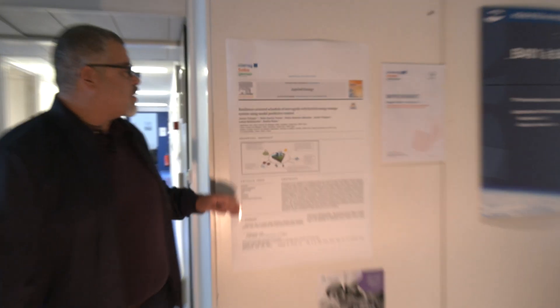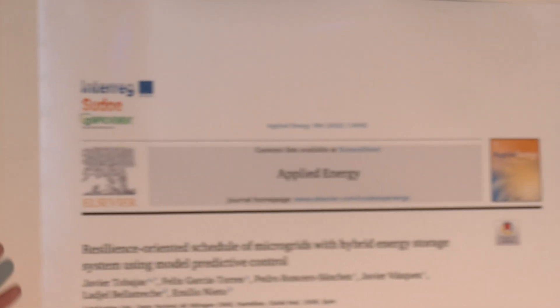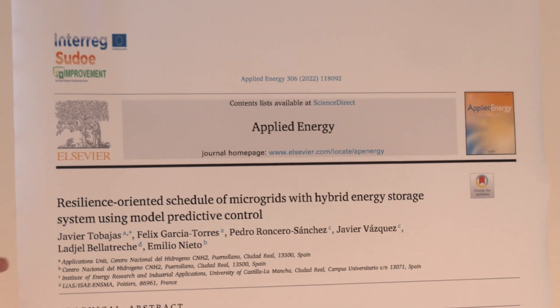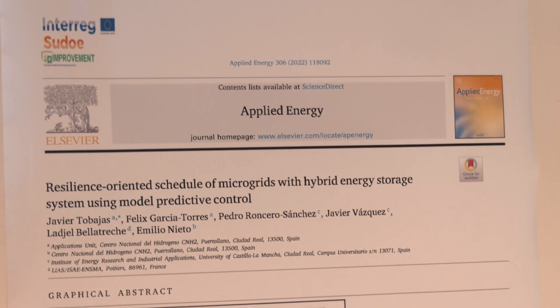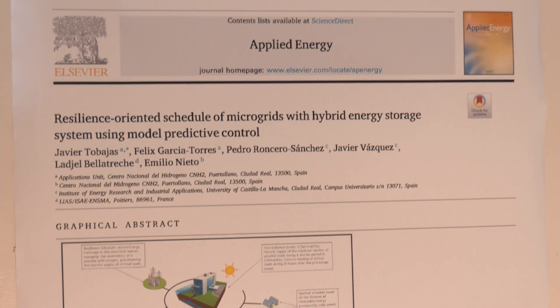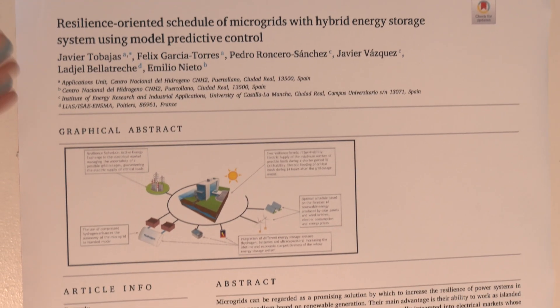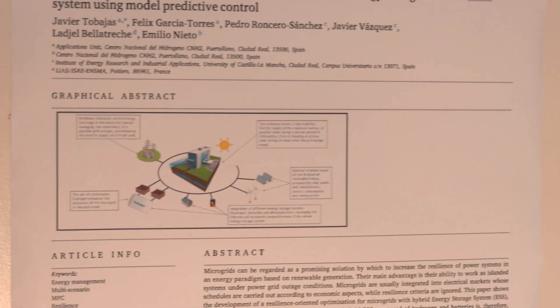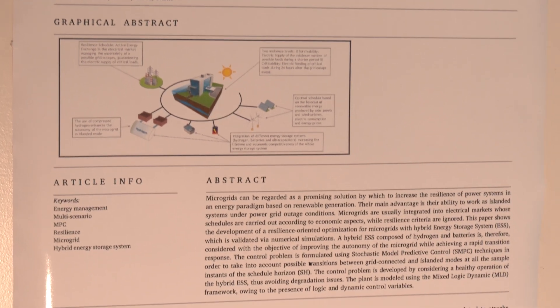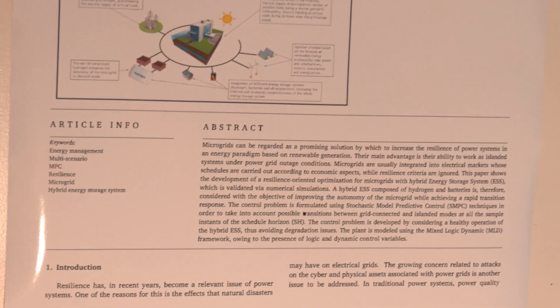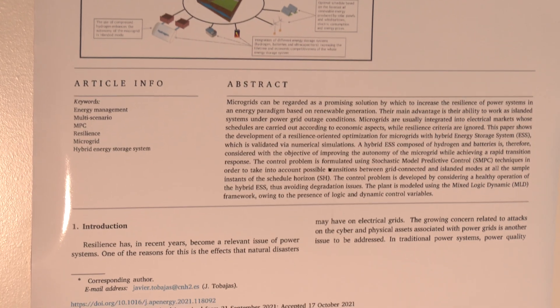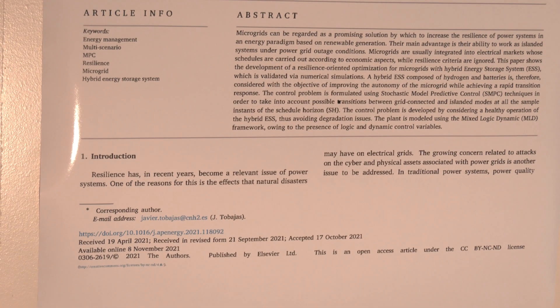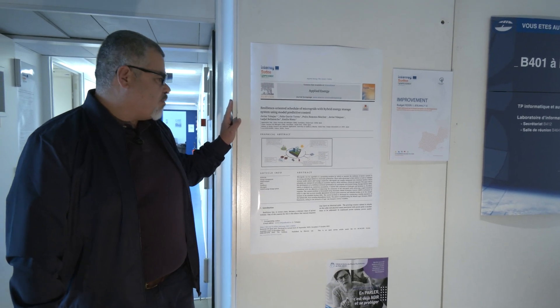Here we will show you the second paper that we get from the project. This paper has been published in a very strong journal with a highly impact factor — Applied Energy. This paper involves many colleagues from the project, from Spain and Portugal. It is very strong work about resilience study for microgrid with hybrid energy storage system using a predictive model.